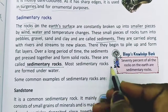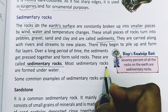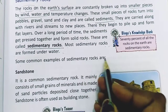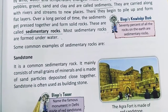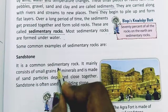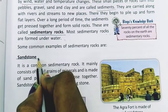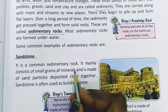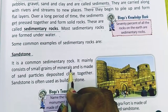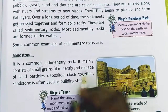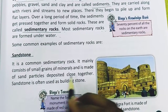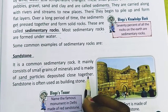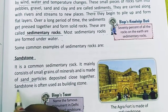These are called sedimentary rocks. Most sedimentary rocks are formed under water. Here are some common examples. The first is sandstone — a common sedimentary rock that mainly consists of small grains of minerals made of sand particles deposited close together.